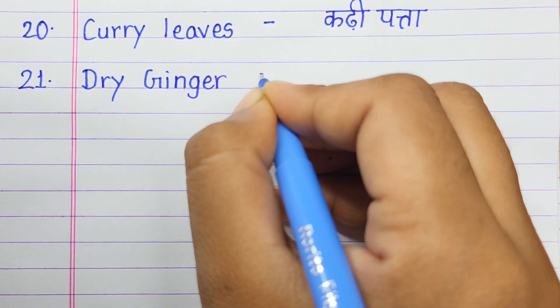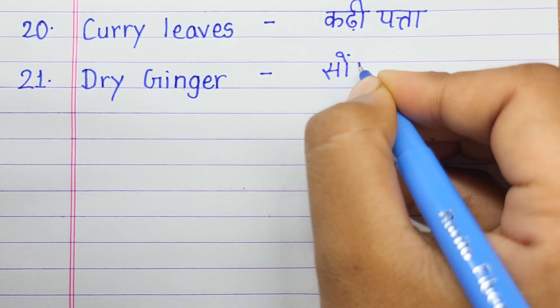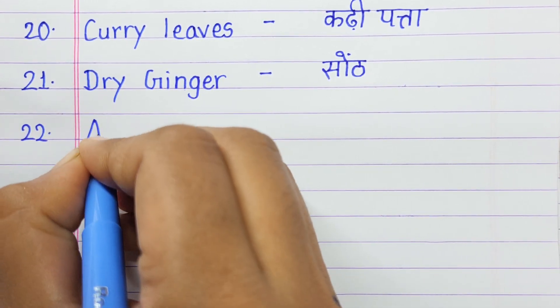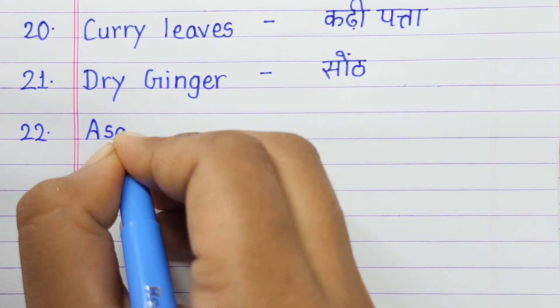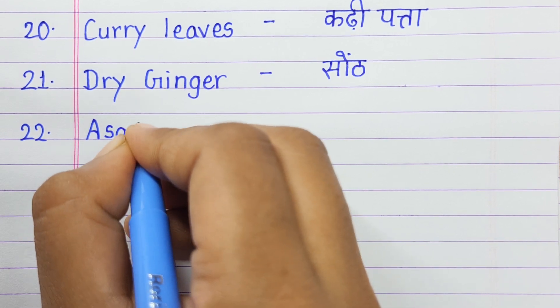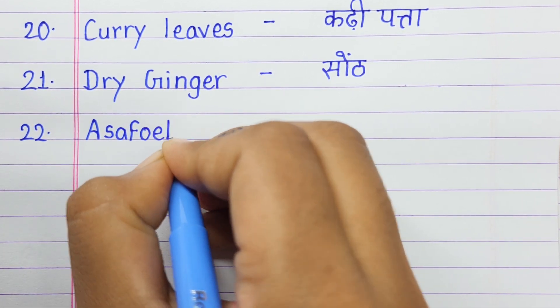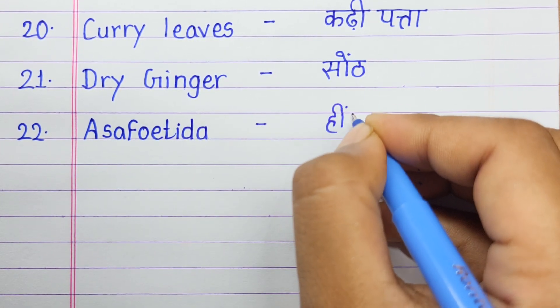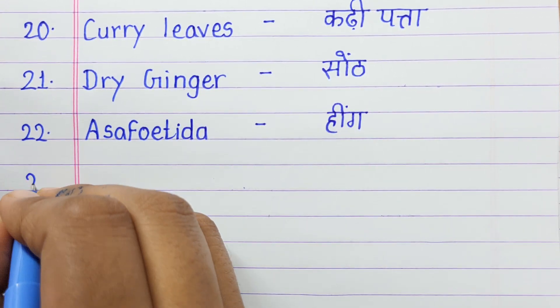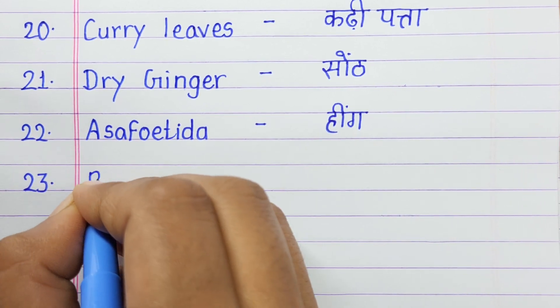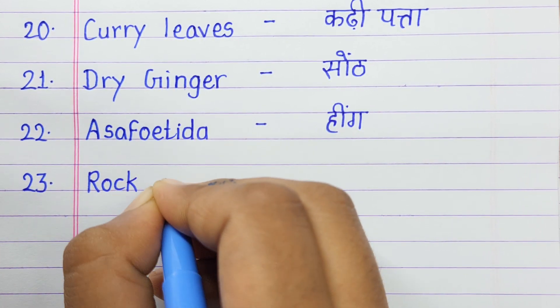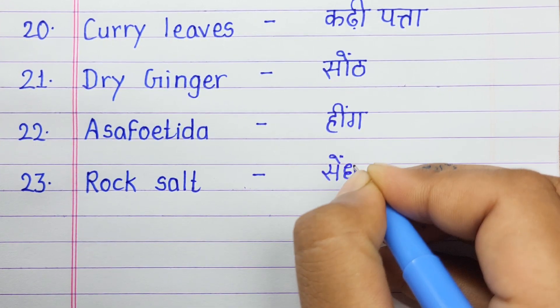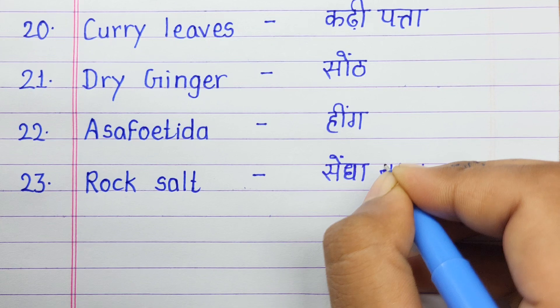Number twenty-one: Dry ginger means sonth. Number twenty-two: Asafoetida means hing. Number twenty-three: Rock salt means sendha namak.